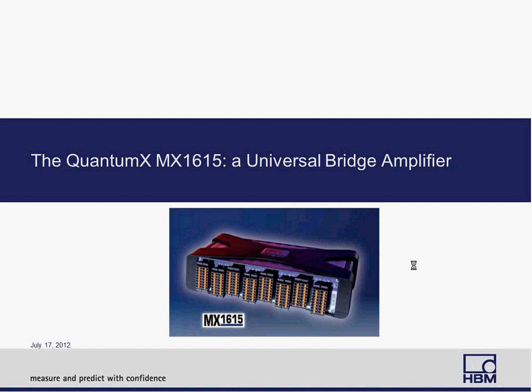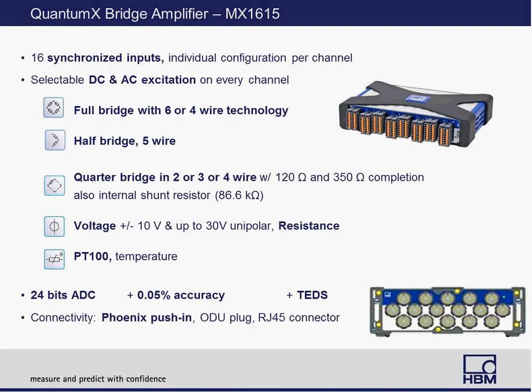Let's take a deeper look into the MX1615 module, which is the bridge amplifier. It has 16 synchronized inputs, and each channel is individually configurable in terms of filter, bandwidth, and sample rate. This is the first module we have that offers both DC and AC excitation — also known as carrier frequency excitation — on every channel. It supports full-bridge with six- or four-wire technology, half-bridge, and quarter-bridge with two-, three-, or four-wire technology, along with 120 and 350-ohm completion resistors and an internal shunt resistor of 86.6 kΩ.